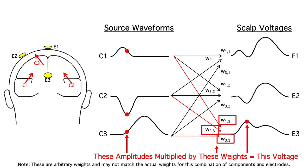Any given electrode picks up a large number of different components. In this example, all three components contribute significantly to the voltage at all three electrodes.